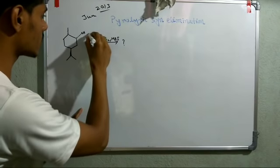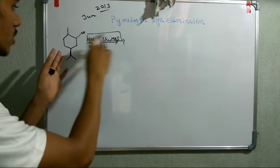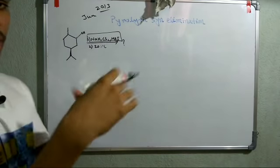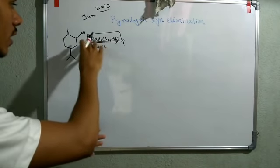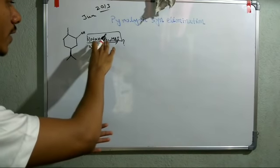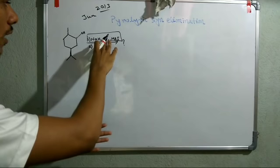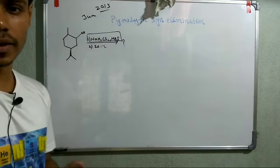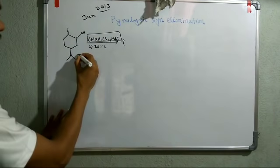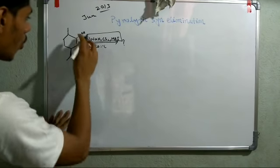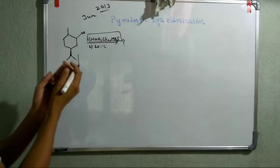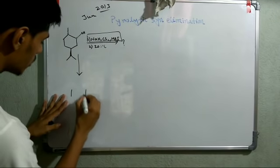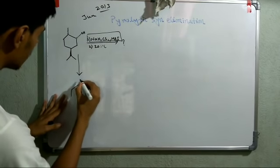First, in the first step you can see there is no elimination — it is some other reaction. The reagents given are sodium hydride, carbon disulfide, and methyl iodide. You have an O-H group in your compound and you are adding sodium hydride, so what will be the reaction?